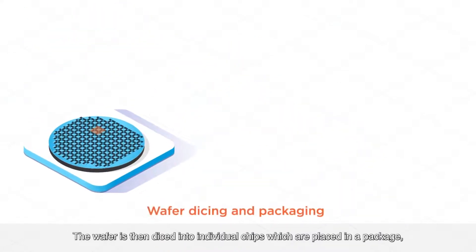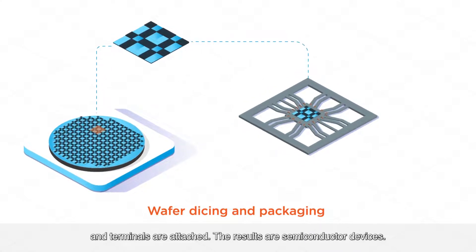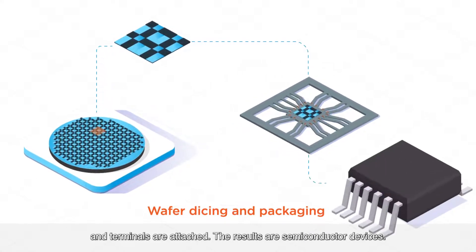The wafer is then diced into individual chips which are placed in a package and terminals are attached. The results are semiconductor devices.